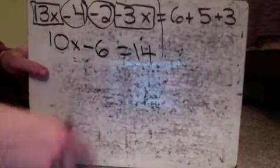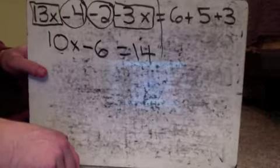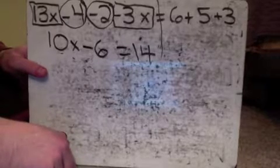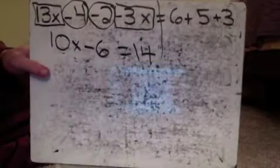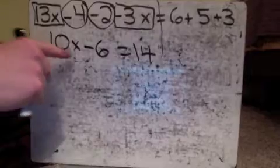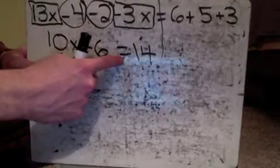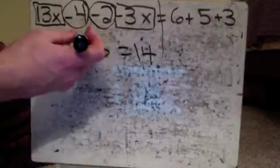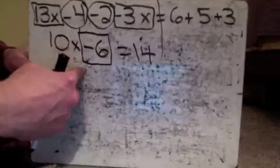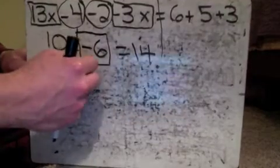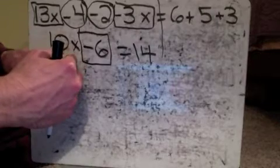10x minus 6 equals 14. Some of you guys could probably go through and figure out what x is right now, but I'm going to show you how to do it. Remember, our goal is to get the x — or whatever the variable is — by itself on one side of the equal sign. Right now our biggest problem is we've got this guy clogging it up over here, and we've got to somehow get rid of it.